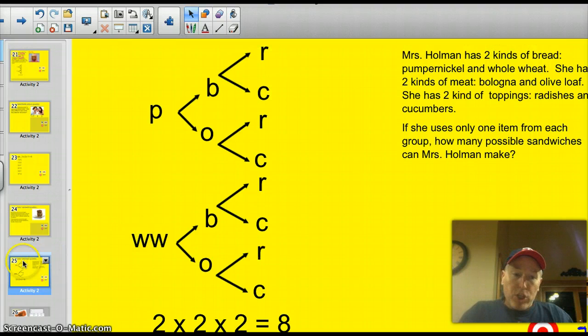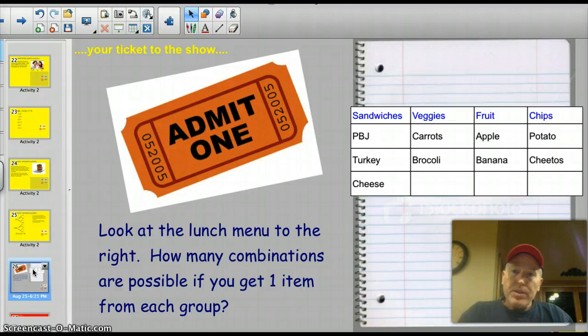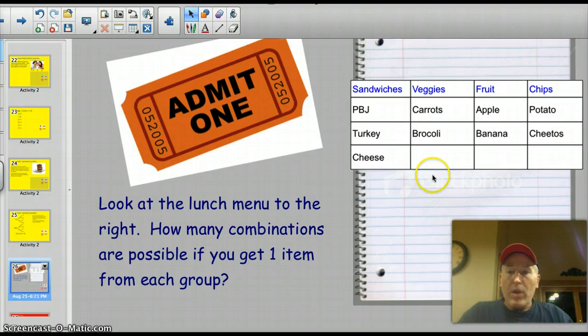Here it is. You have got... Look at this lunch menu to the right. How many possible combinations are if you get one item from each group? So, you've got a couple of sandwiches, a few sandwich types, a few veggies, a couple of different fruits, and a couple of different chips. See if you can figure out how that is. Remember, please use abbreviations like P, T, and C, and create yourself a table. All right? Also, figure out the combinations. You know how to figure out how many there will be right away.